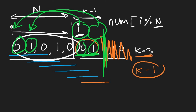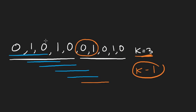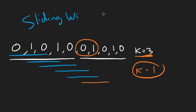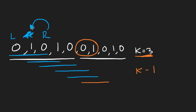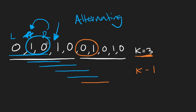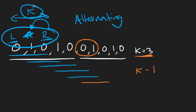For the sliding window optimization, we use two pointers — left and right. We compare adjacent elements: if they're different, we expand the window by moving the right pointer. We only need to compare the newest element with the previous one, since we assume everything before is already alternating. When the window size (R minus L plus one) equals K, we know we have an alternating window and can increment the result.